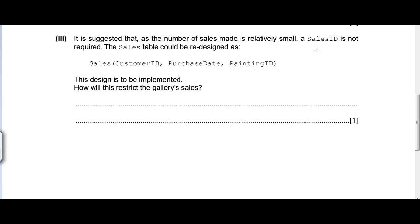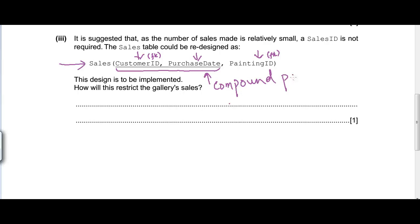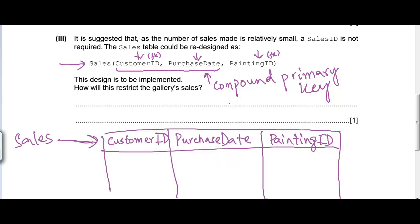It is suggested that since the number of sales is relatively small, a sales ID is not required. The sales table has been modified: the sales ID is removed and we now have three attributes: customer ID, purchase date, and painting ID. Customer ID and painting ID are both foreign keys in this table, and we now have a compound primary key where customer ID and purchase date together make the primary key.